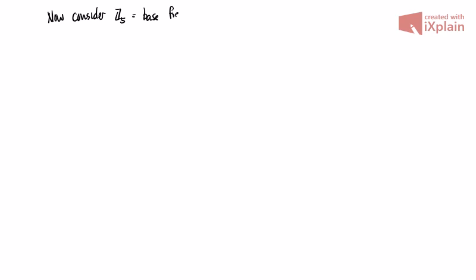Now consider an example with Z₅ as our base field, replacing Q. Take the polynomial x² + x + 1 in Z₅[x]. This has no roots in Z₅. You can check this by plugging everything in: plug in 0 you get 1, plug in 1 you get 3, plug in 2 you get 7 ≡ 2, plug in 3 you get 13 ≡ 3, plug in 4 you get 21 ≡ 1. So there are no roots — we can try them all.